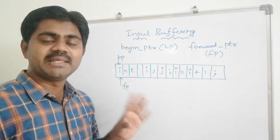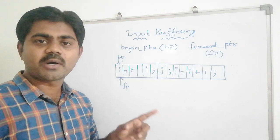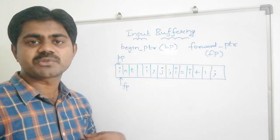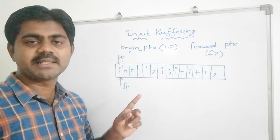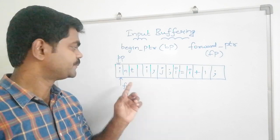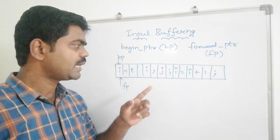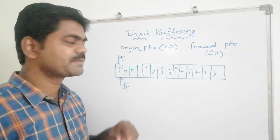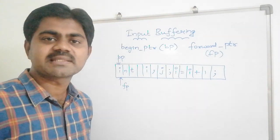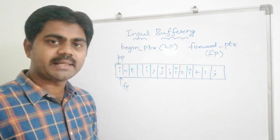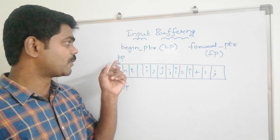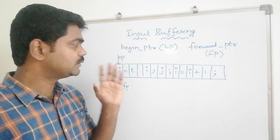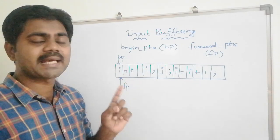Initially, both pointers point to the first character — or the first token — of the input string. Let's take an example: int i comma j, i equal to i plus 1. The first character here is 'i', so both begin pointer and forward pointer will point to that first character 'i'.